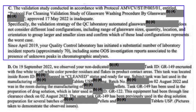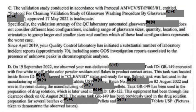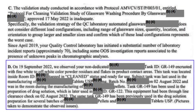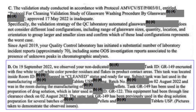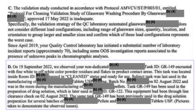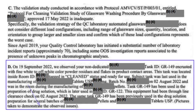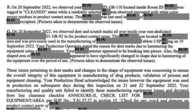Example number four: on 19th of September 2022, auditors observed white powder residue and flakes on the equipment surface; however, the equipment was tagged as a cleaned one. Notably, auditors mentioned in the Form 483 that they took a photograph of this discrepancy — as you can see on screen, it is mentioned that a picture was taken to demonstrate the observed issue.